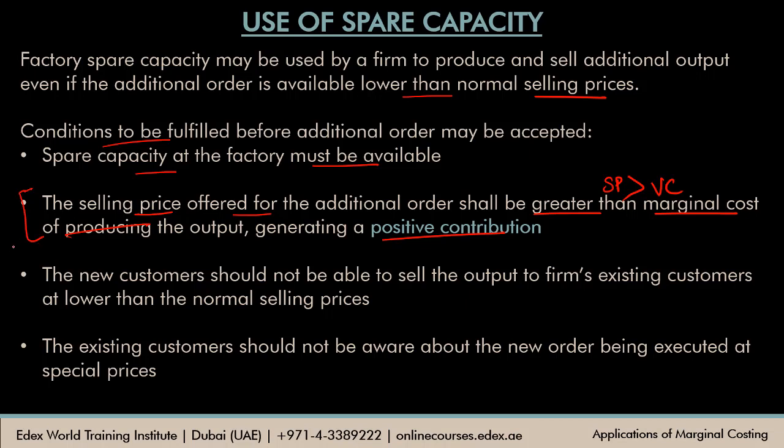That was a financial factor — you have to see positive contribution. There are two important non-monetary factors as well. The new customers should not be able to sell the output of the firm to the firm's existing customers at lower than normal selling prices. If they buy it from you and sell the output to your existing customers at lower prices, you may have a bad relationship with those customers. And obviously, existing customers should not be aware of this additional order, because if they know you're selling at lower prices to others, they will not be willing to pay you the same higher price in future.